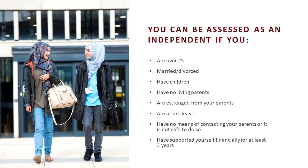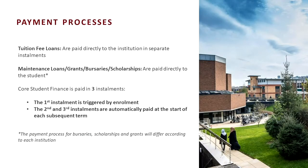You can be assessed as an independent student if you're over 25, if you're married or divorced, if you've got children, if you've got no living parents, if you're estranged from your parents, if you're a care leaver, if you've got no means of contacting parents or it's not safe to do so, or if you've supported yourself financially for at least the last three years.